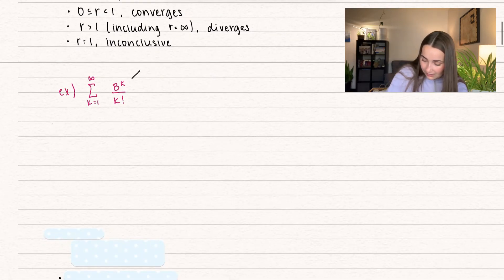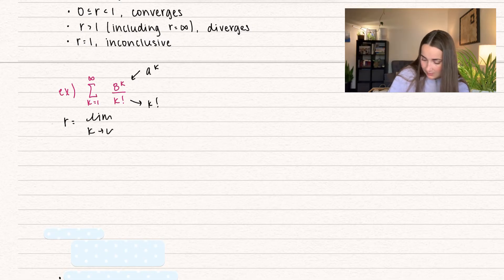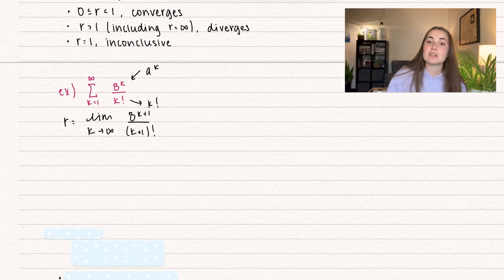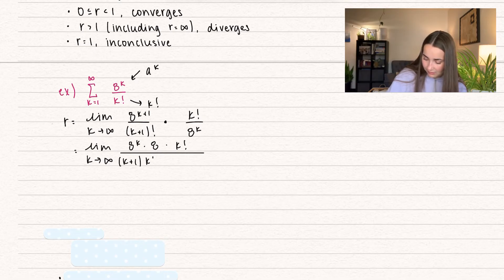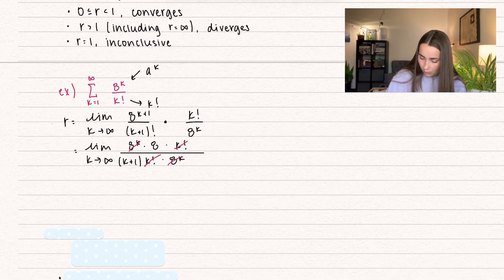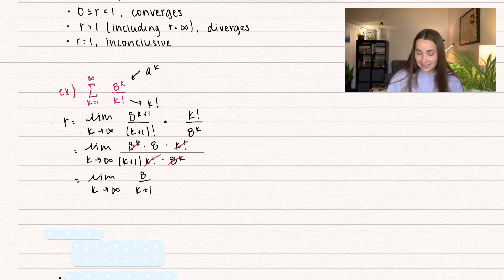Here's an example for the ratio test — we have a to the k and k factorial. We set r equal to the limit as k approaches infinity of eight to the k plus one divided by k plus one factorial, multiplied by k factorial over eight to the k. Simplifying: eight to the k plus one equals eight to the k times eight, and k plus one factorial equals k plus one times k factorial. The eight to the k and k factorial cancel, leaving eight over k plus one. As k goes to infinity, this approaches zero, so r equals zero and the series converges.